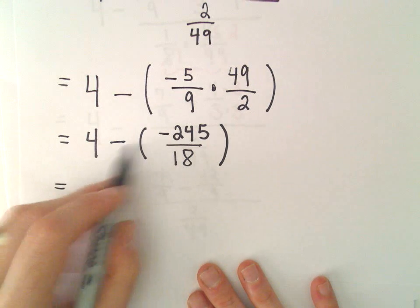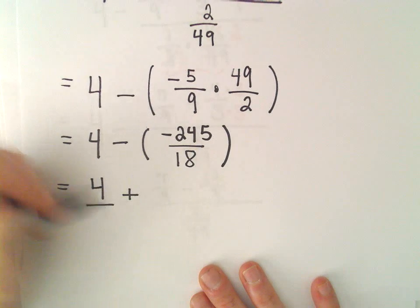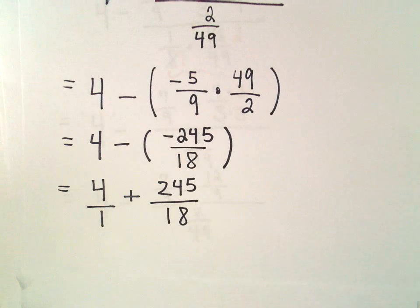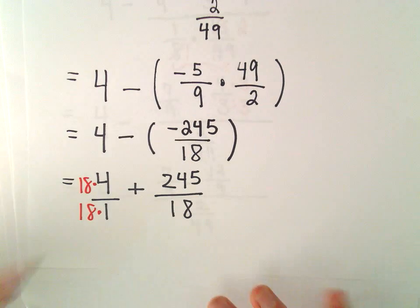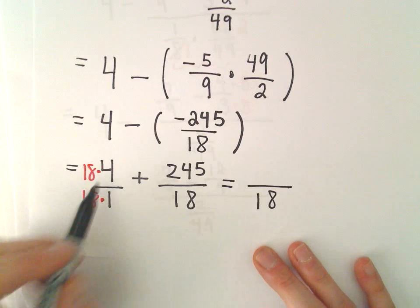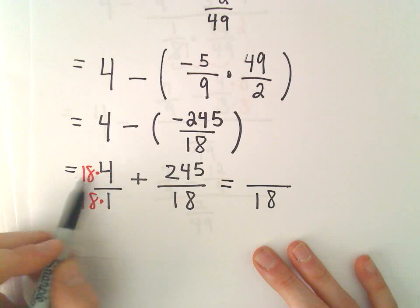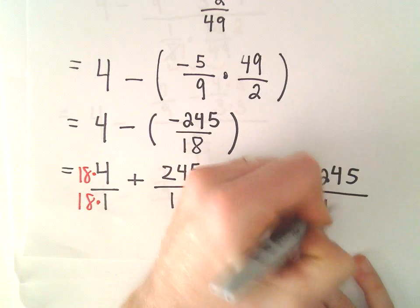All right, so now we've got 4 minus a negative number. That's the same thing as 4 plus the number. I'm going to write 4 simply as 4 over 1. So then we have 245 over 18. Almost there. We're trying to write this as a single fraction. To get common denominators, I can multiply top and bottom of my first fraction by 18. So we definitely get 18 in the bottom. 4 times 18, I'm going to do 4 times 10, which is 40. 4 times 8, which is 32. 40 and 32 will leave us with 72. Plus 245 over 18.